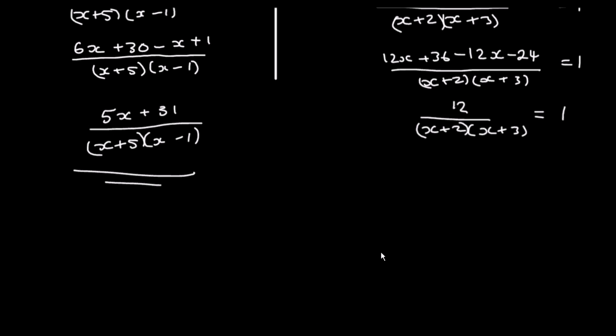So we've got 12 over this equals 1. When we're solving equations with fractions, often the easiest thing to do is to get rid of the fractions. So to get rid of the fractions here, we multiply by them — we multiply both sides by x plus 2 times x plus 3. That has the effect of getting rid of it on this side, and I've got 1 times this, which is just itself — 1 times anything is itself.